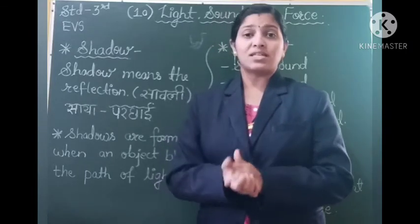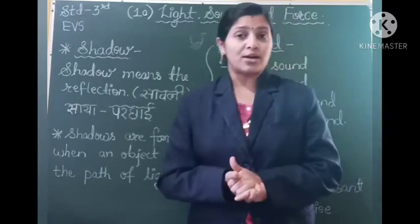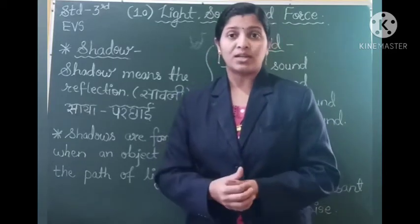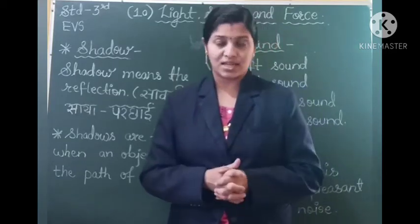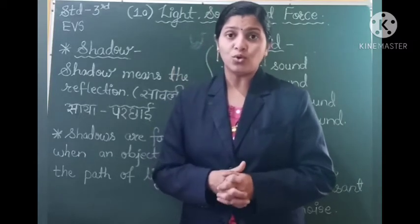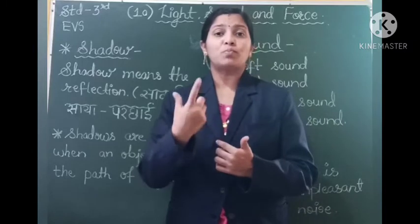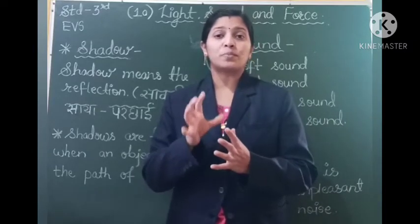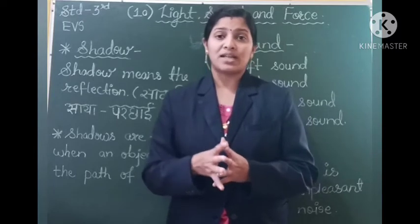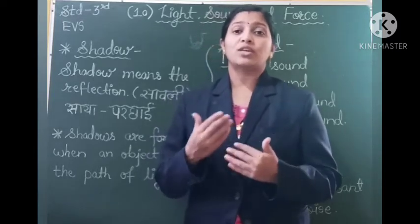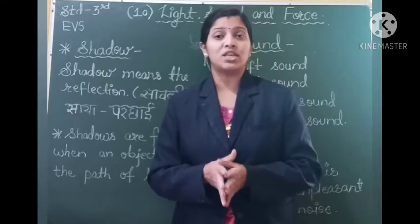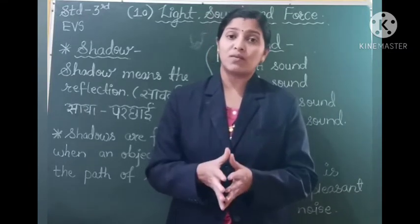The best example for seeing a shadow is: suppose you are walking on the ground and the sun is shining in the sky. When sunlight falls on you, the light is not able to pass through you — you are obstructing and blocking the light of the sun. Just then, on the other side, in front of you, you can see your image — your reflection — that is your shadow.